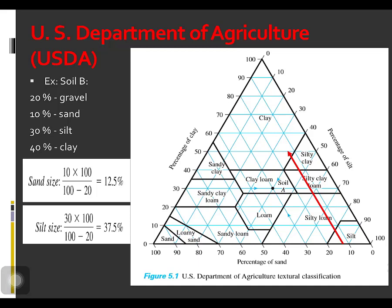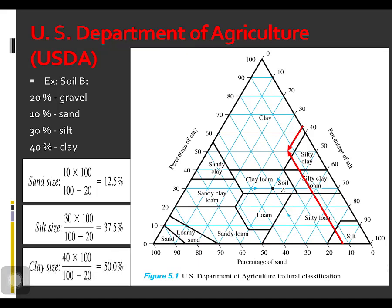Next, for the silt size, let us modify the textural composition from 30 percent. The silt size formula is the percentage of silt (30%) multiplied by 100, all over 100 minus the percentage of gravel (20%), which equals 37.5. Plot 37.5 on the chart and extend the line. For the clay size, the modified textural composition equals the percent of clay (40%) multiplied by 100 over 100 minus the percentage of gravel (20%), giving 50 percent. Plot 50 percent on the chart and extend the line.